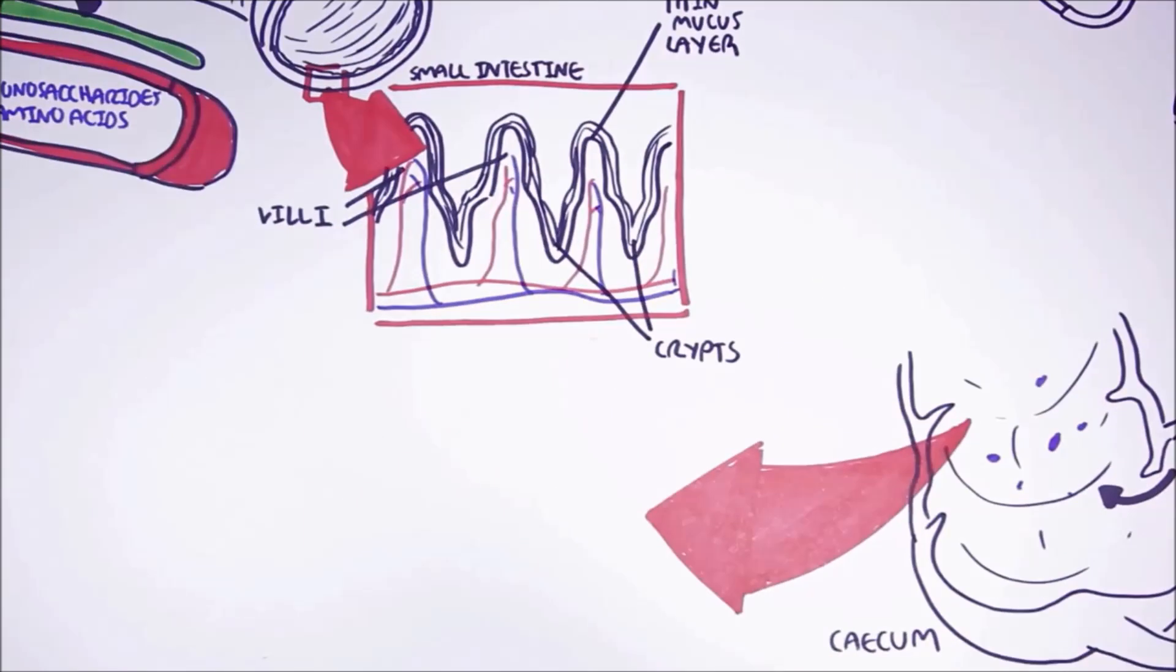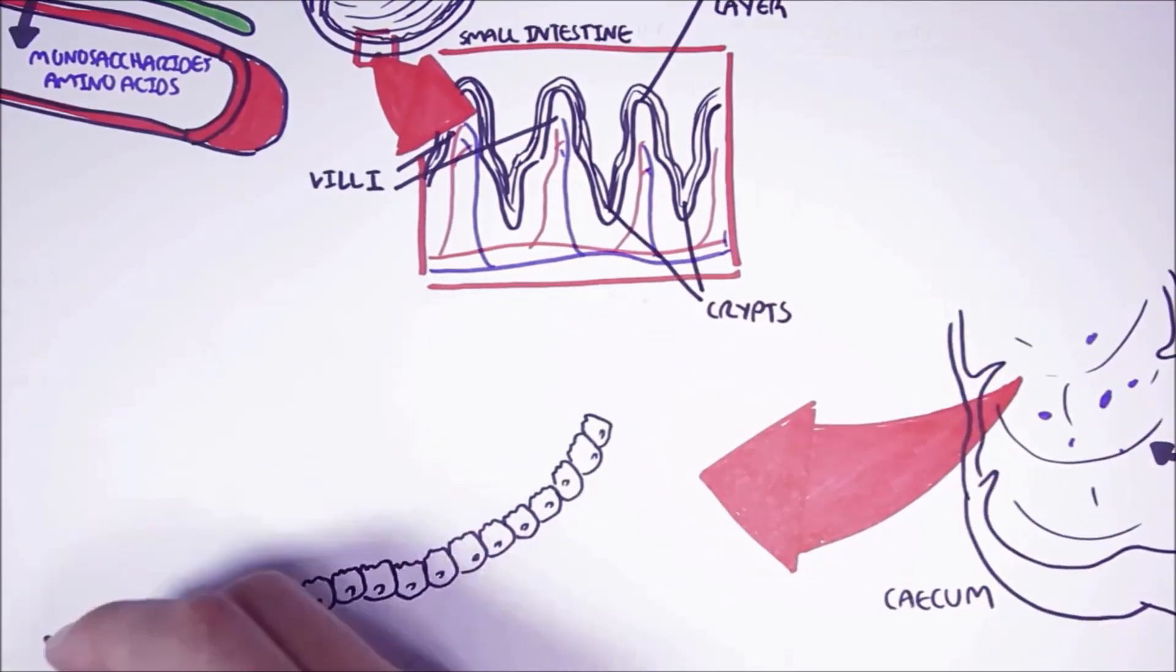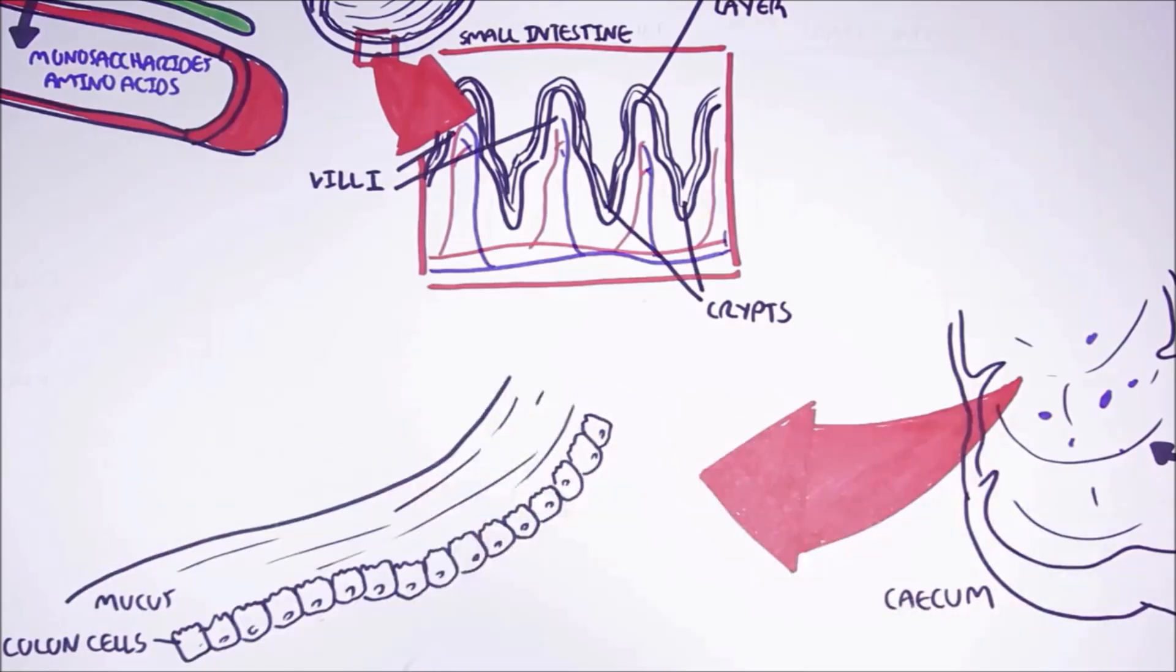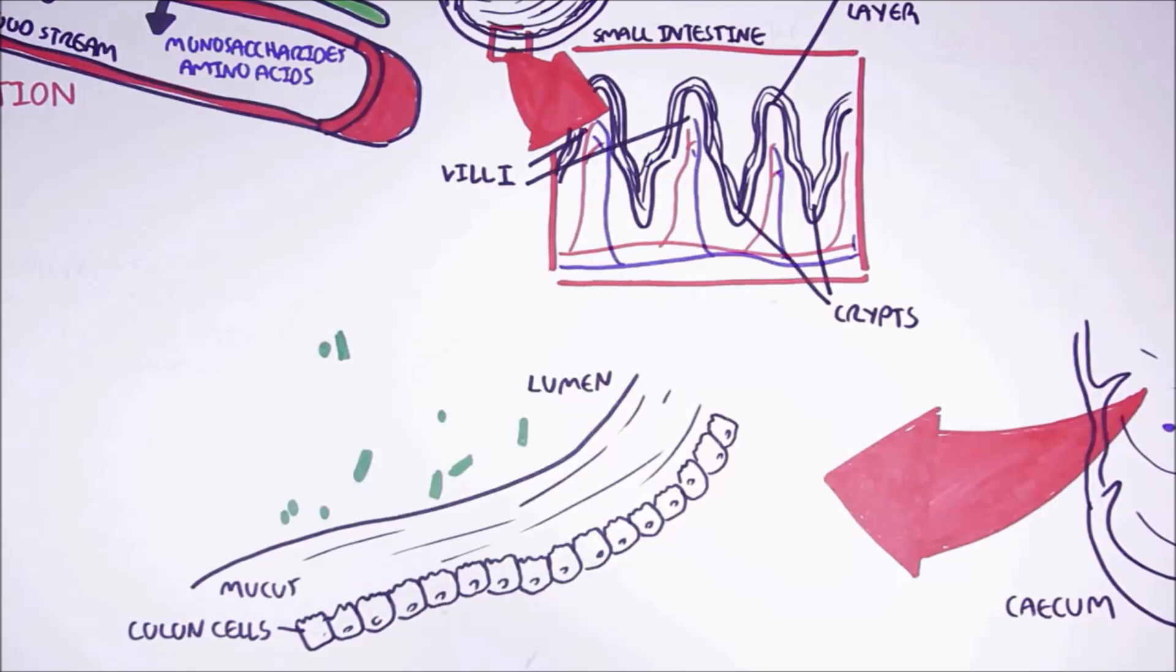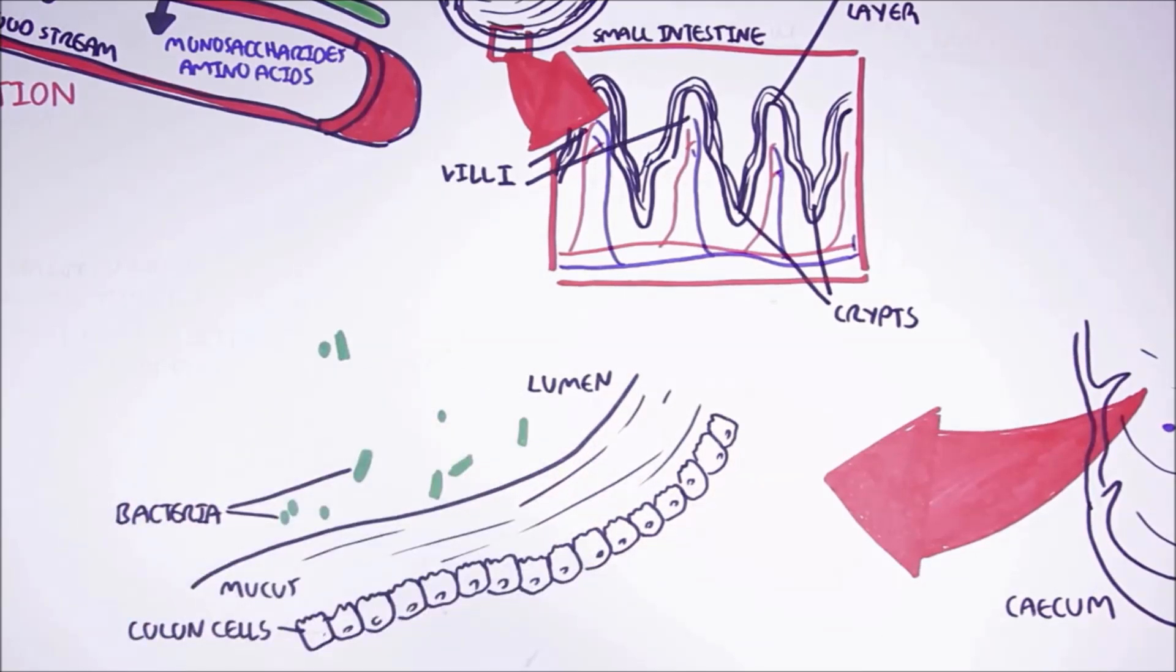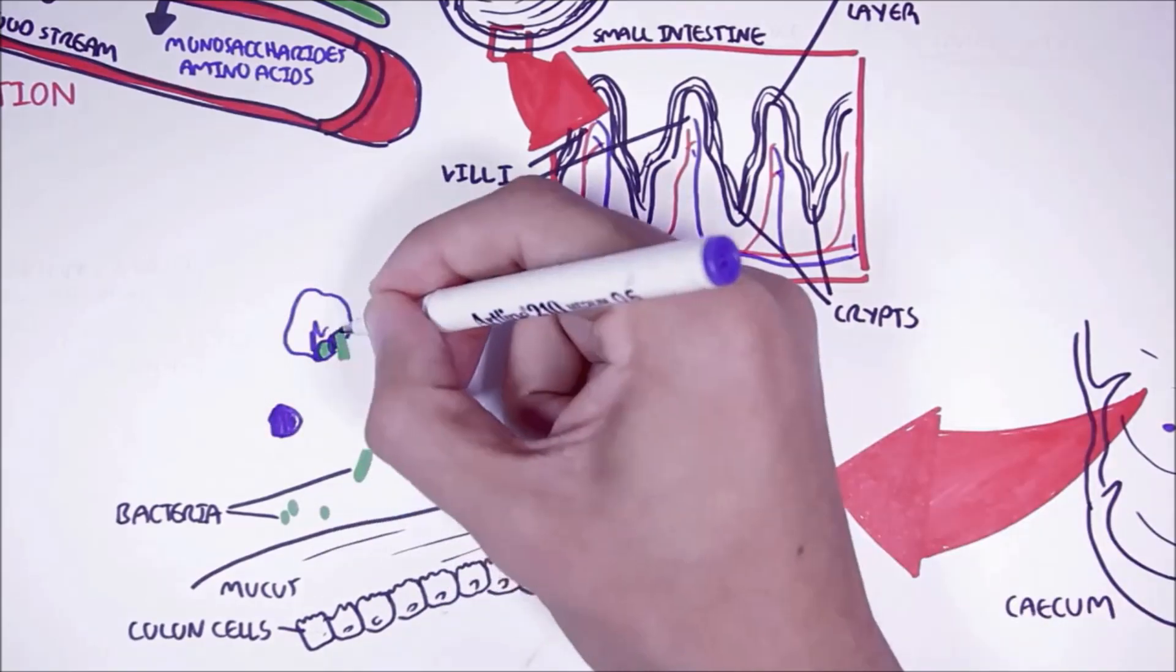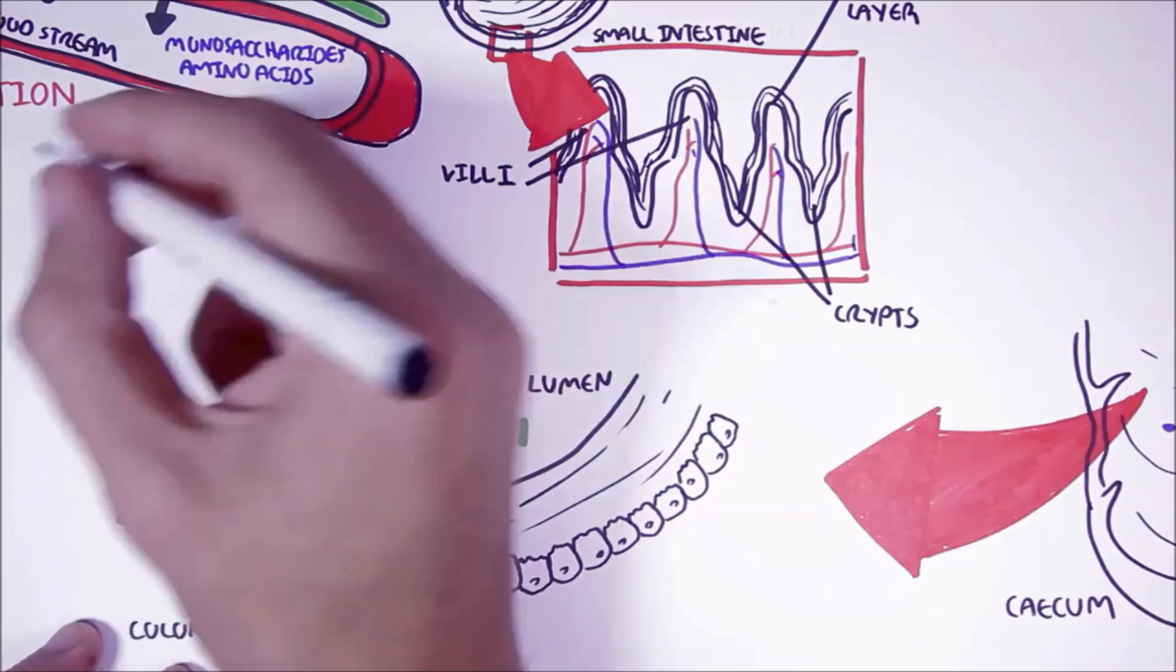Here we are zooming into this area. Here we have the colon cells. We can find mucus above the colon cells, and here is the lumen. Residing within the lumen are many types of bacteria that can digest these foods that have escaped digestion in the small intestine.